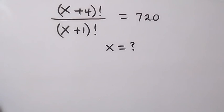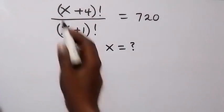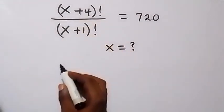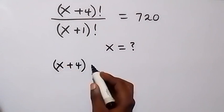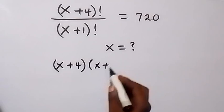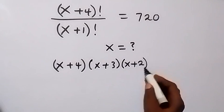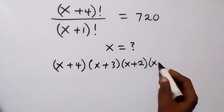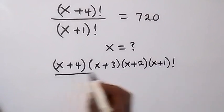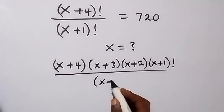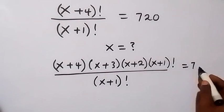We have (x+4)! over (x+1)! equals 720. We can write this as (x+4) times (x+3) times (x+2) times (x+1)!, all over (x+1)!, which is equal to 720.